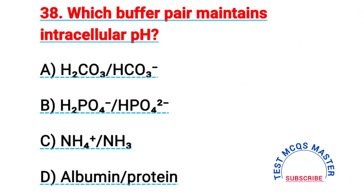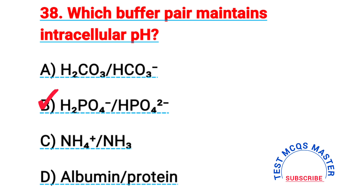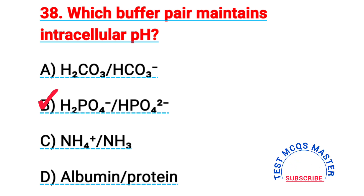Question number thirty-eight: which buffer pair maintains intracellular pH? The right answer is B, H2PO4⁻ / HPO4²⁻.